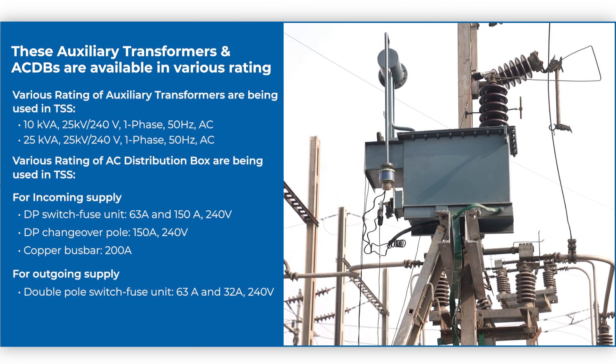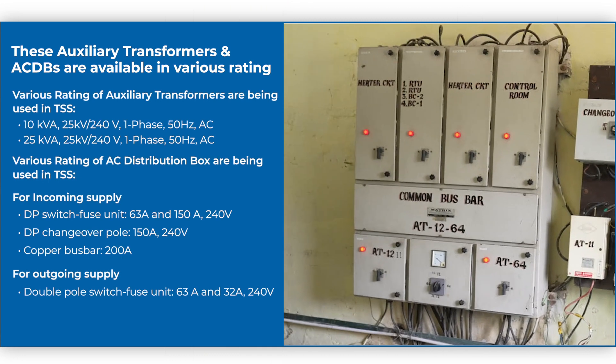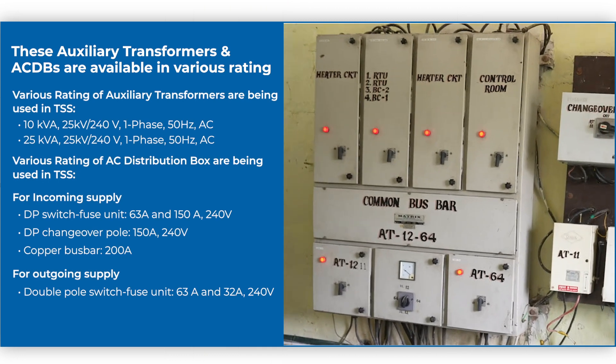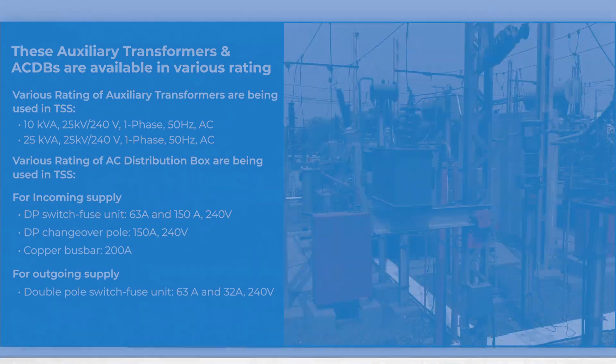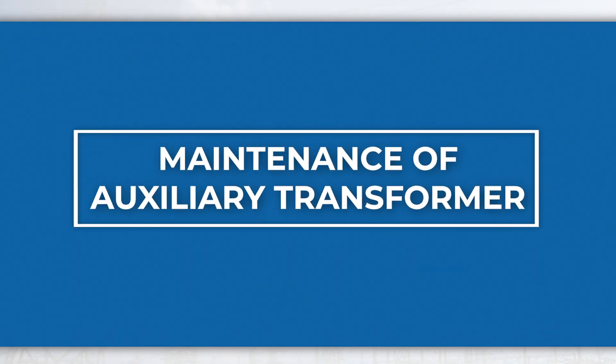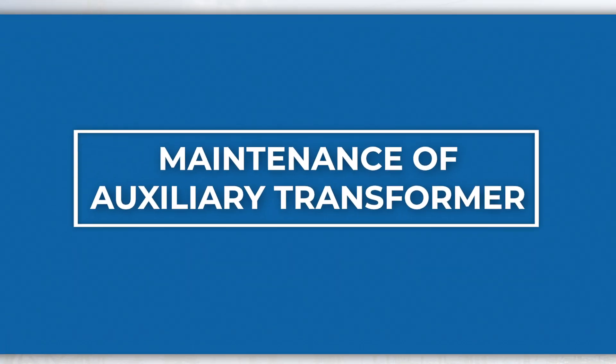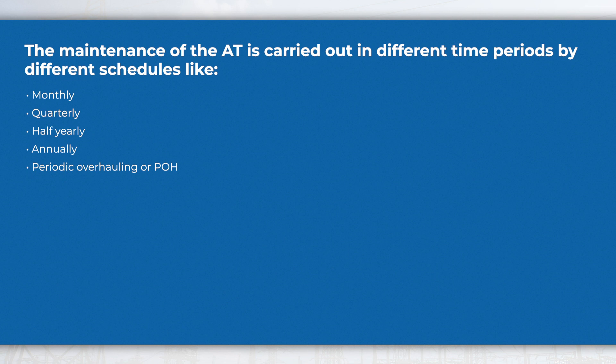These Auxiliary Transformers and ACDBs are available in various ratings. The maintenance of the AT is carried out in different time periods by different schedules like monthly, quarterly, half-yearly, annually, and periodic overhauling (POH).